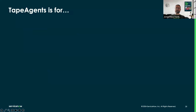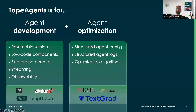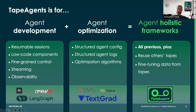TapeAgent combines the best of agent development software that enables resumable modular state machines — like LangGraph, AutoGen, and CrewAI — with session resumption, modular components, vibrant controls, streaming, and observability. It also includes agent optimization capabilities using structured modules and structured logs, similar to DSPy, TextGrad, and Trace, with structured agent configuration, structured agent logs, and optimization algorithms. This makes TapeAgent a holistic framework for both research projects and delivering high-quality data-driven agents, supporting fine-tuning LLMs with data from tapes.